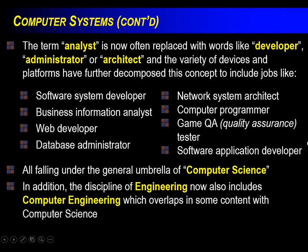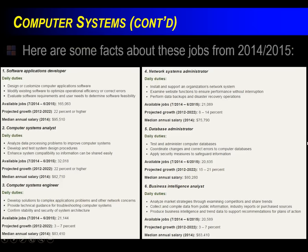Engineering is also very close — specifically, universities now offer computer engineering and a lot of its coursework overlaps with computer science. That's why at the University of Manitoba, the computer science department is in the engineering building. From 2014-15 job listings, top positions in the computer science industry include: software application developer, computer system analyst, computer system engineer, network system administrator, database administrator, and business intelligence analyst.